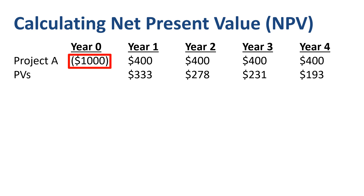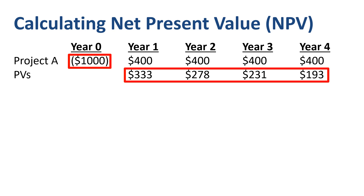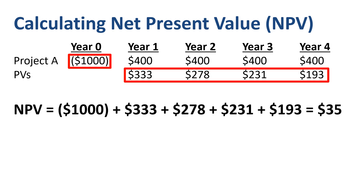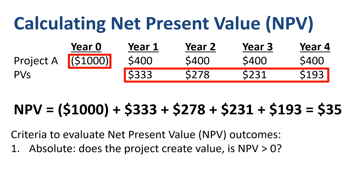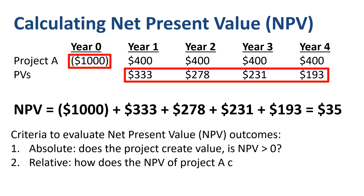To calculate NPV, we take the cash outflow (the negative investment number) and sum the present values of the future benefits. Those five numbers summed — the investment plus the present values — give us $35 of net present value. You can look at this in absolute terms: NPVs bigger than zero create value for the company. In relative terms, maybe there are other project proposals with NPVs far higher than $35, and project A might not be the most attractive, especially when the investment budget is tight.